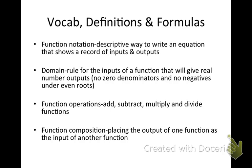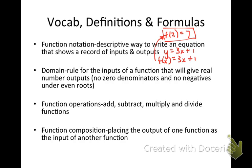Let's start with function notation — this is just a review. Function notation is a descriptive way to write an equation that shows a record of inputs and outputs. So an equation example, we could write as 3x plus 1. In function notation, we replace the output y with f of x. And then if we place a number in for x, we note that in the function notation. So if we place 2, 3 times 2 is 6 plus 1 is 7. This gives us a record that when we plug 2 into the equation, we get out 7.